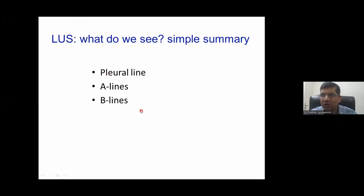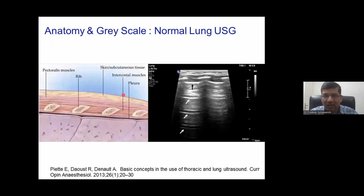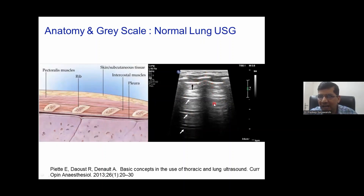In lung ultrasound, we concentrate on three important lines: the pleural line, A-lines, and B-lines. It is very easy and simple — anybody can perform lung ultrasound. First, let's see the anatomy of the lung: we have skin, subcutaneous tissue, ribs, intercostal muscle, and pleura. Below the pleura is the lung. On grayscale ultrasound, below the lung tissue is artifact, which we will come back to.